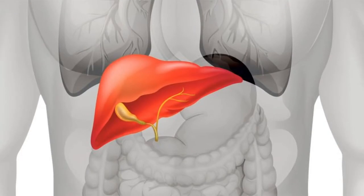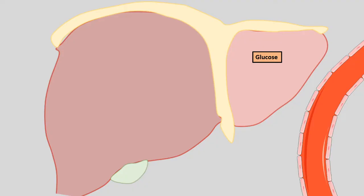Let's look at first what happens to the liver, then we'll move on to brain, muscles and adipose tissue. Before understanding what happens during the fasted state, we need to understand what are the normal pathways happening in the liver hepatocytes during a fed state when glucose is abundant.